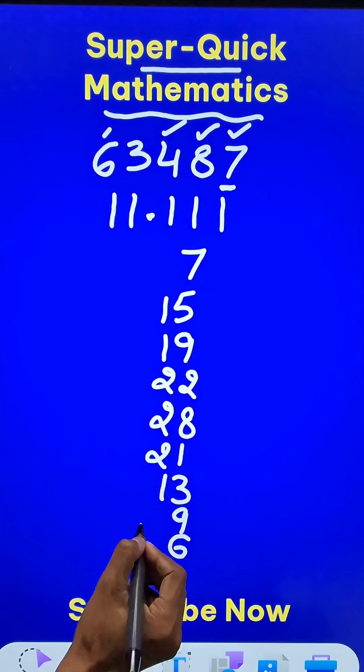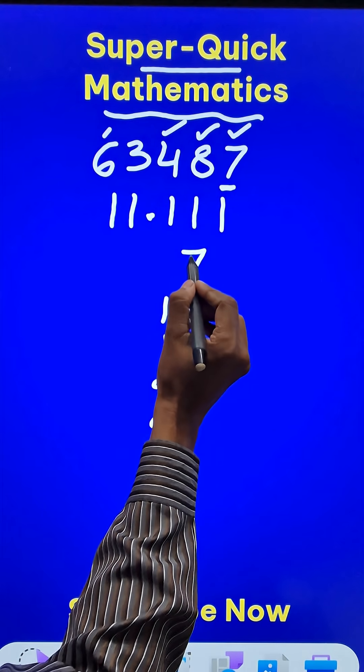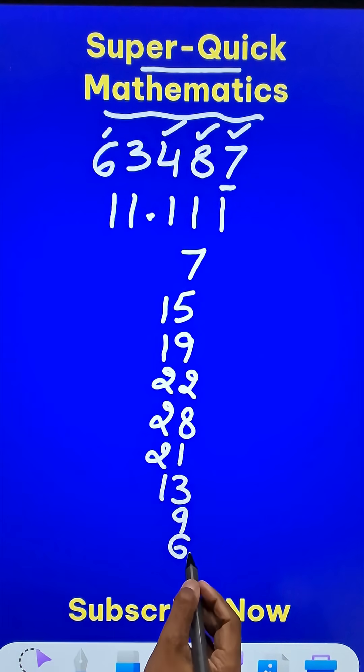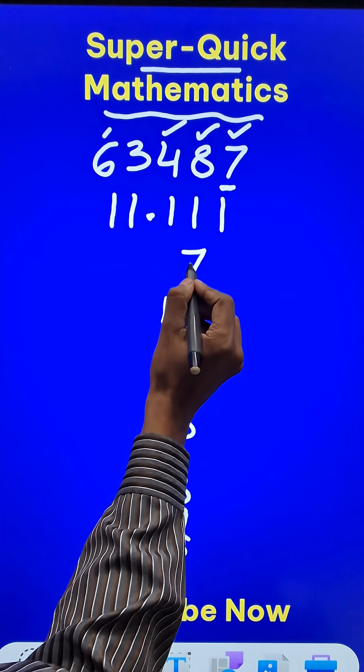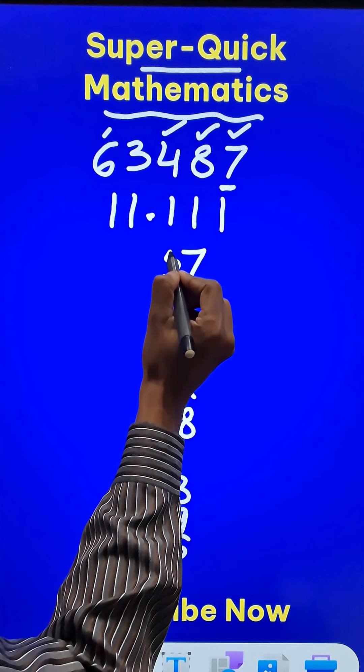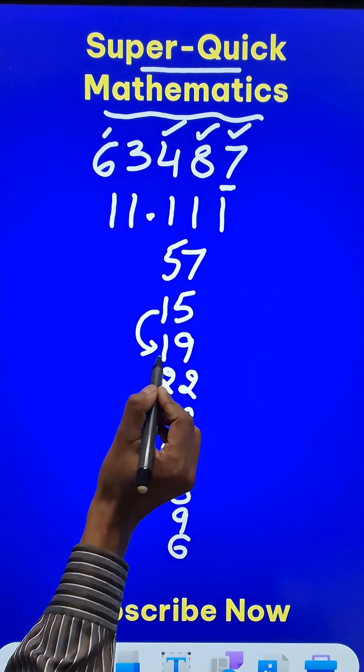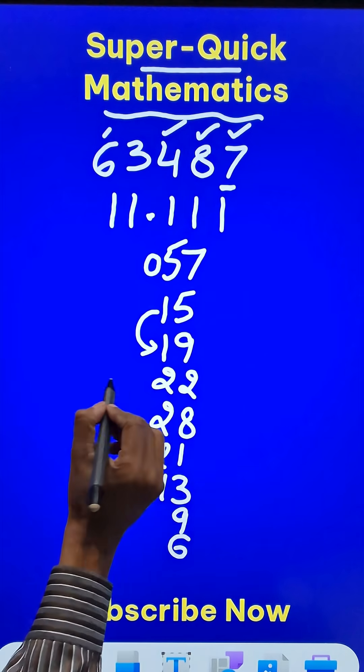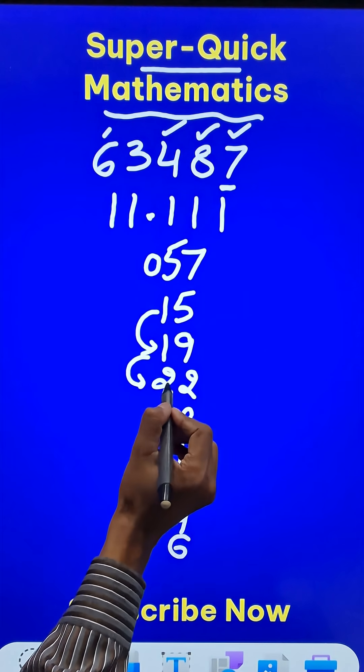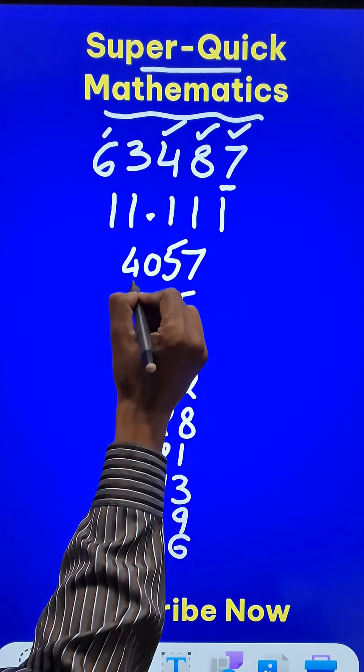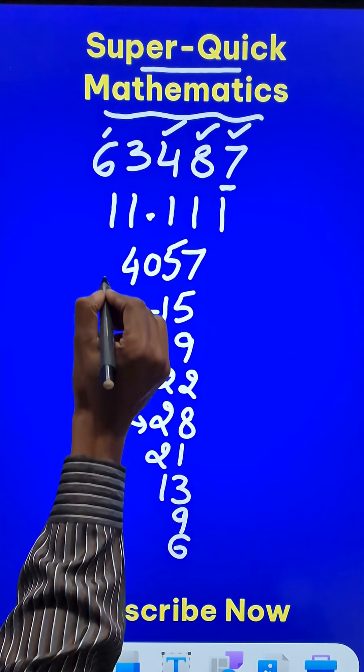Now once you write all these digits, our answer will start from the unit place here. So we have the answer 7 at the unit place, then 15 means we have a 5 and then 1 gets carried forward. So this becomes 20. So we have a 0 and 2 gets carried forward. So this becomes 24. So 4 and another 2 gets carried forward. So 28 becomes 30, so 0.